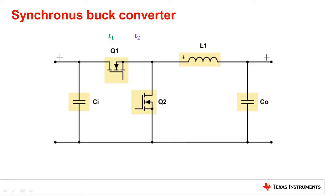Looking at a synchronous buck converter, there are two noisy loops that are created by high switching currents. One loop is created during the on time of the converter, T1. The other loop is created during the off time of the converter, T2.